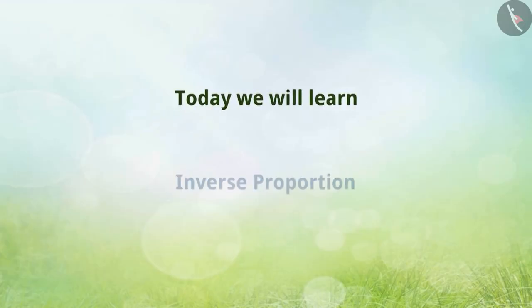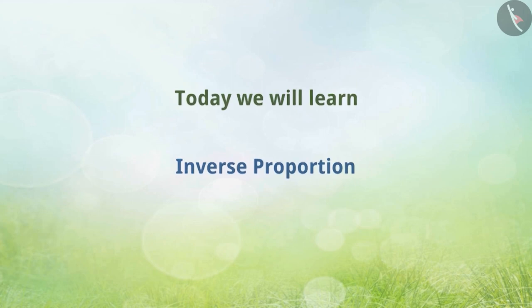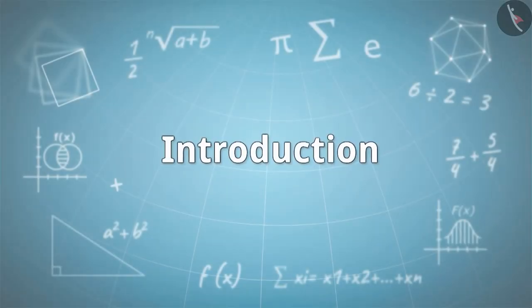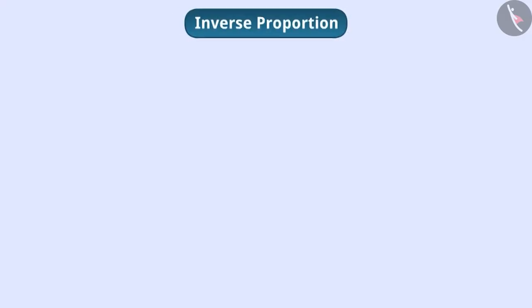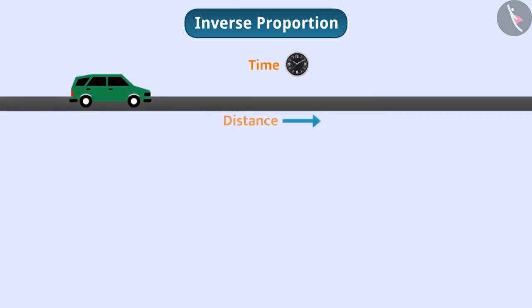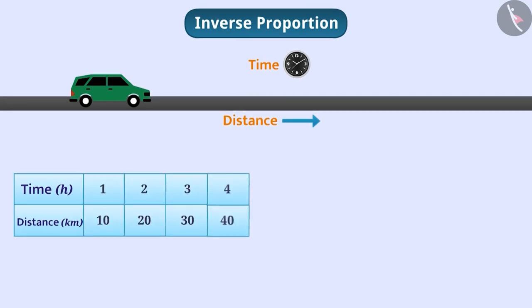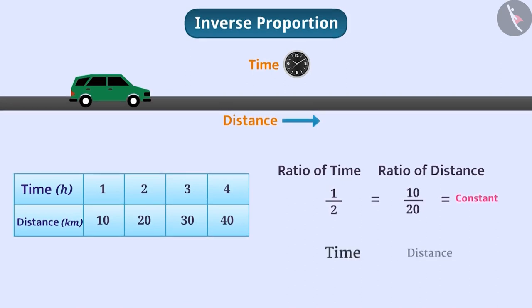Today we will learn about inverse proportion. In the previous video, we discussed the situation when two quantities simultaneously increase or decrease in such a way that the ratio of their corresponding values remain constant. In such a situation, we say that the two quantities are in direct proportion.